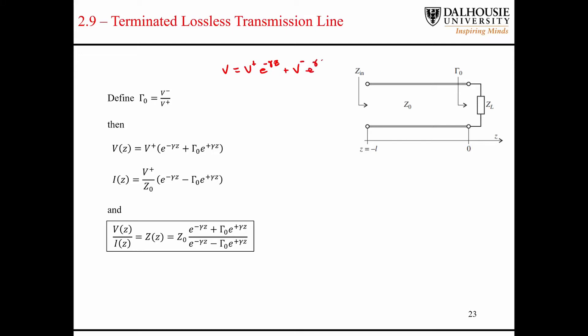The solution to the voltage wave equation that we arrive at through the transmission line equations takes this form. I mentioned that this term here represents forward traveling waves and this term here represents backward traveling waves.